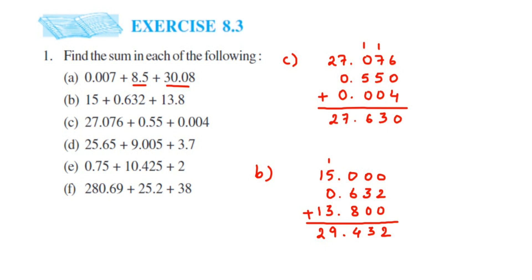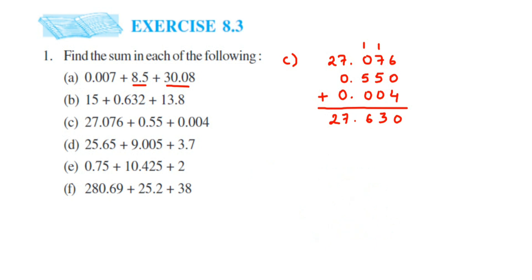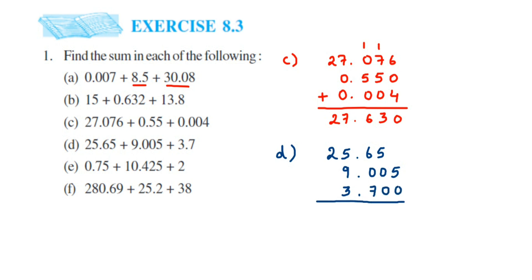Next question: 25.65. The next number is 9.005 — line up with the decimal, 9 on the left side and 0, 0, 5 on the right. The next number is 3.7 — decimal point here, 3 here and 7 here. Empty places you can put 0. Now add it: 5, then 5; 6 plus 7 is 13 so carry 1; decimal point; 9 plus 5 is 14, plus 3 is 17, plus 1 carry is 18, so 8 and carry 1; 2 plus 1 is 3. So the answer is 38.355.